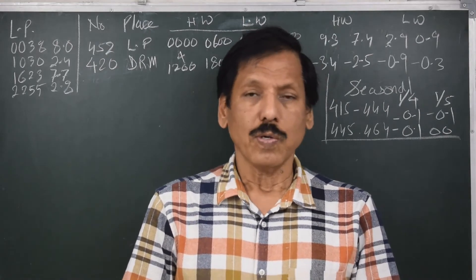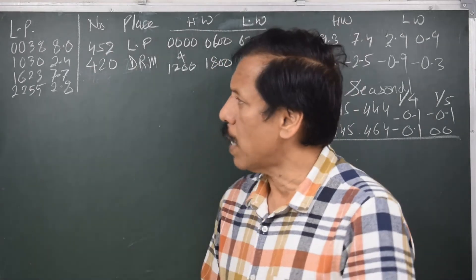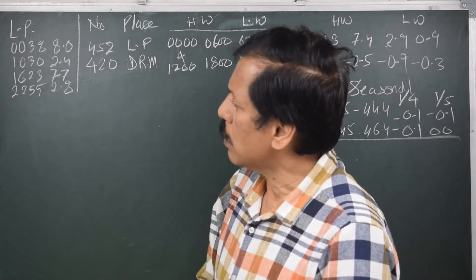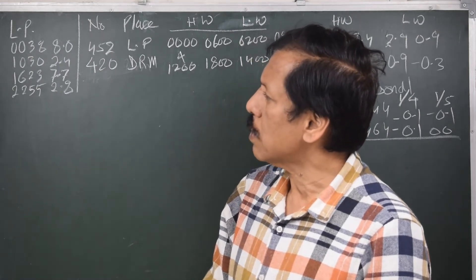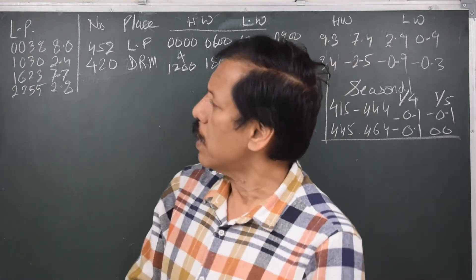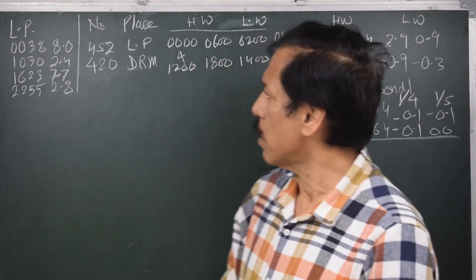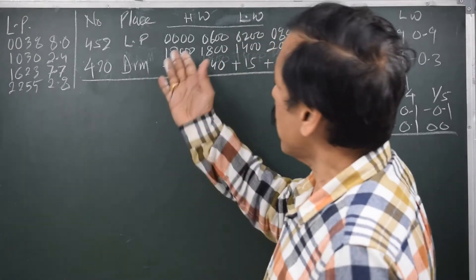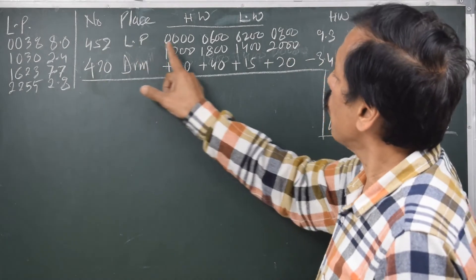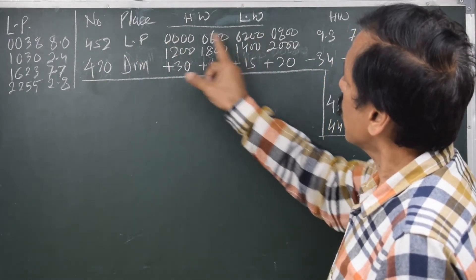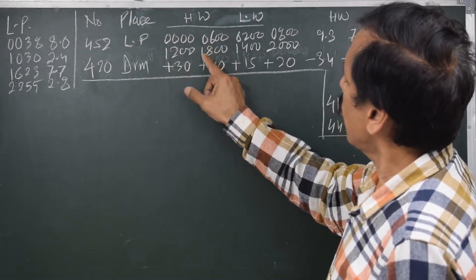I must go to Part 1 and write down the predictions given there. For Liverpool, high water is 8 metres, low water is 2.4 metres, and so on. The first tidal prediction time given is 0038 for 8 metres, 1030 for 2.4 metres, etc. The four high water timings written for Liverpool (port 452) are 0000, 1200, 0600, and 1800.